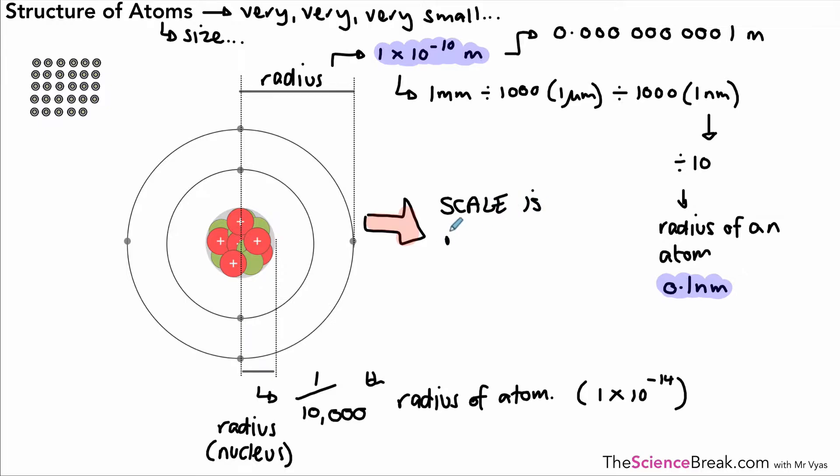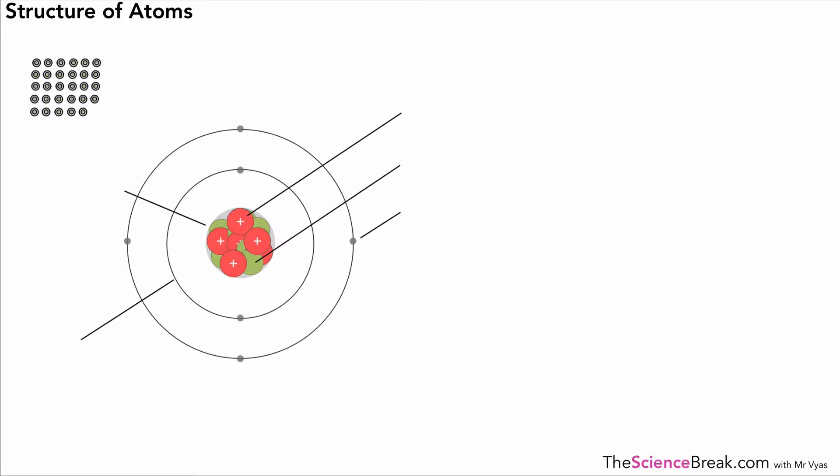We can't draw the diagram to the right scale because if I drew a nucleus with this radius—say one centimeter—I'd have to have 10,000 centimeters for the rest of the radius, and that's about 100 meters. So we draw the atoms like this. Now that we have an understanding of the sizes, we want to make sure we know the different parts of an atom.